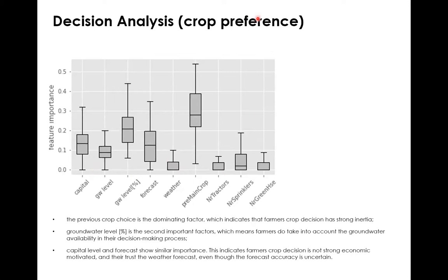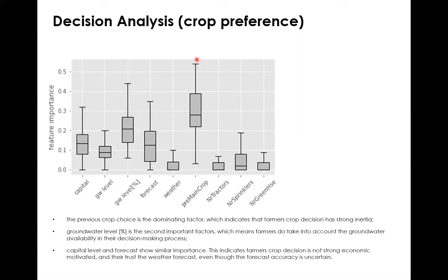Then we applied the decision tree classification on the game results. During calibration of the decision tree model, the algorithm produces sensitivity scores for feature variables, telling you which feature plays a bigger role in achieving good classification. Since our classes are the decision variables and our features are factors that may affect the farmer's decision in the game, this sensitivity informs us which factors affect farmers' decisions most. For example, for the decision regarding crop preference, a box plot shows the calculated sensitivity score for all potential feature variables — from capital level to different equipment owned. The most important factor is actually the previous crop choice: what they did in the last year affects their crop choice this year the most. It is a kind of inertia — quite interesting — meaning farmers have a habit of doing what they used to do. The second most important factor is the groundwater level in percentage — how critical the groundwater level is.